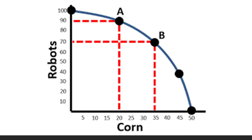We can reverse that situation to continue with opportunity cost. What would be the opportunity cost of moving from point B back to point A? In this case, I'm gaining robots, but what am I losing? I'm losing corn. At B I had 35 corn, and at A I have 20. So to go from B to A, I have an opportunity cost of 15 corn.